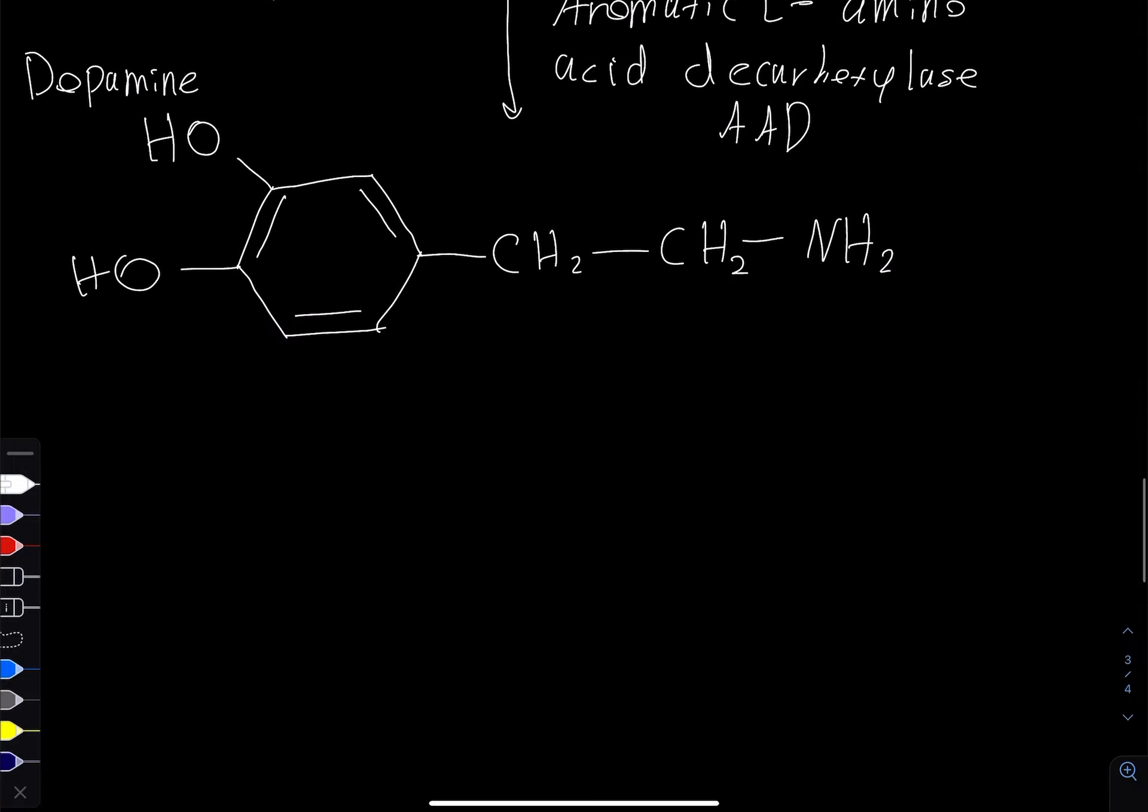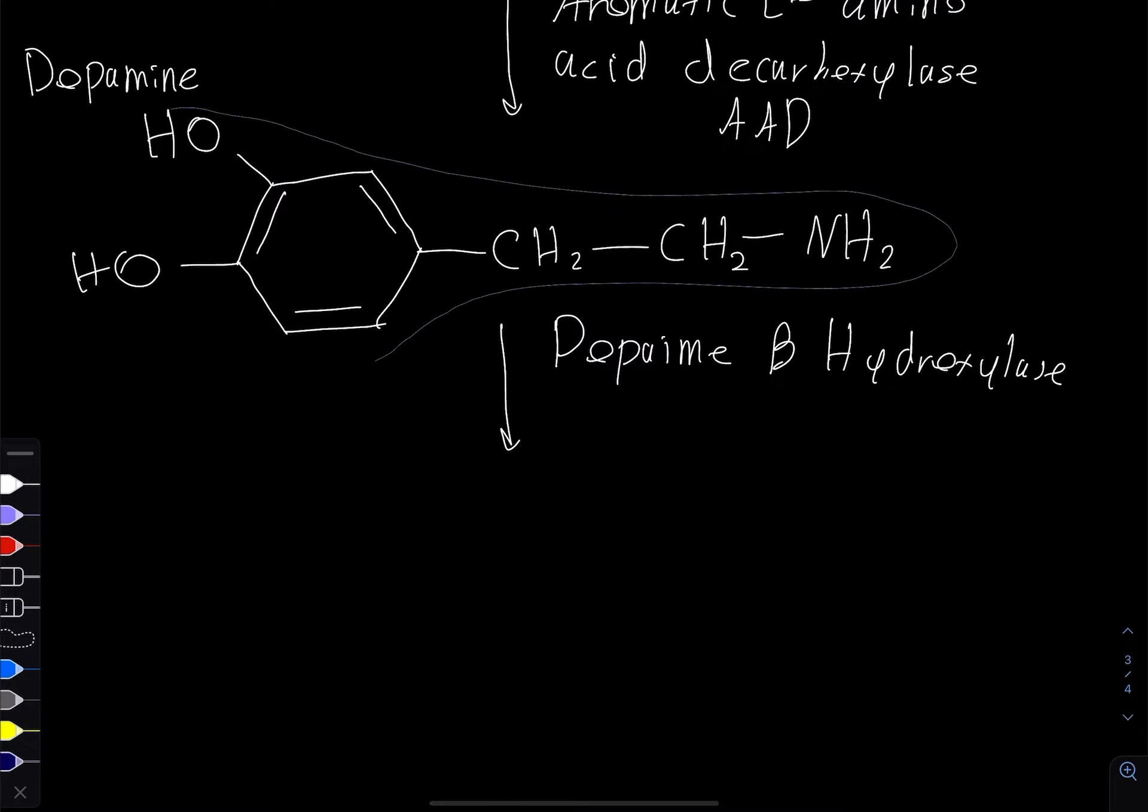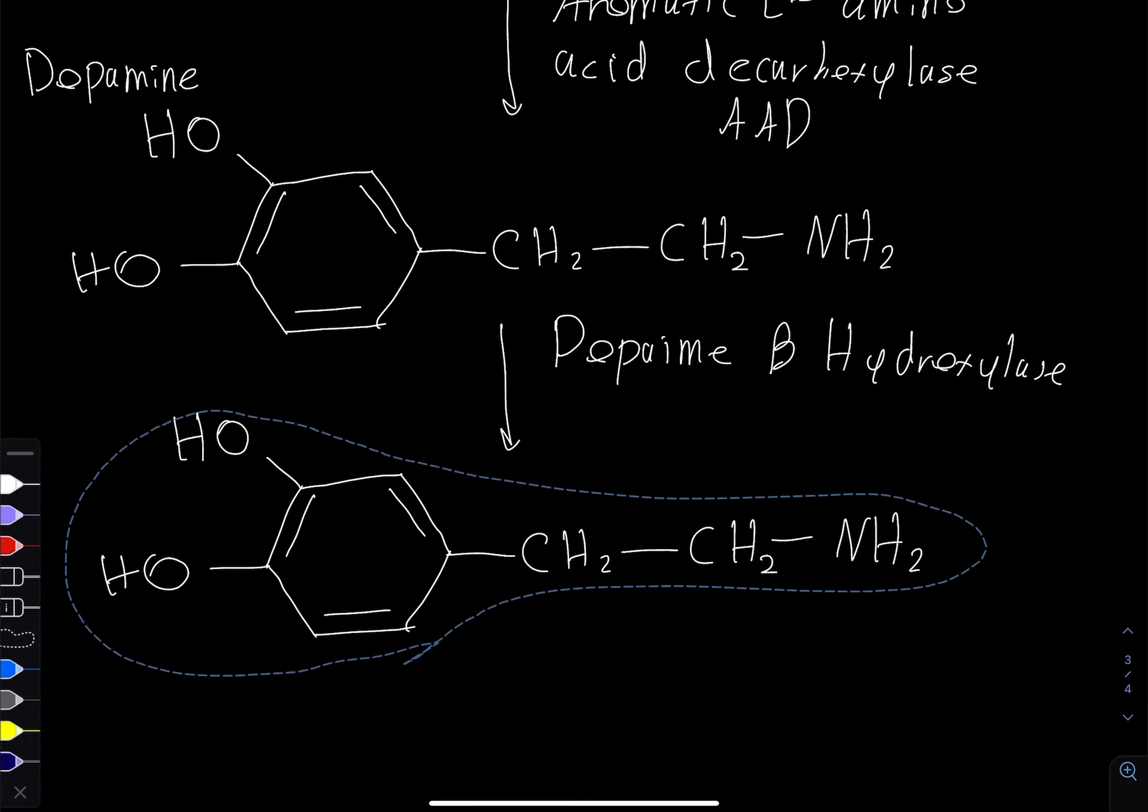Now in the next step, we're going to use an enzyme called dopamine beta hydroxylase. This is going to take this molecule and it's going to look similar, but it's just going to add a hydroxyl group to it right here.